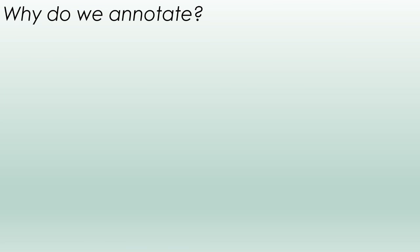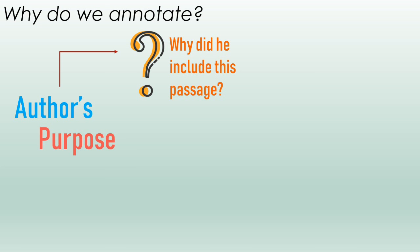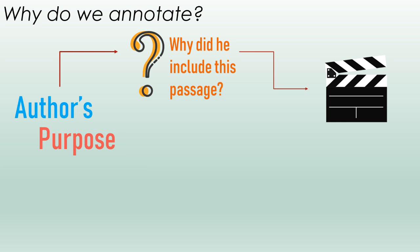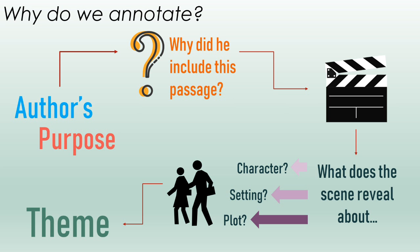Why do we annotate in the first place? We're trying to find out the author's purpose — the reason why the author wrote this at all. Why did he decide to include this specific passage in his piece of writing? Think of the author as a director making a movie. Just as a director decides which scenes to cut, authors have to edit and remove some passages. To figure out why this piece of text made the cut, we annotate and determine what the passage reveals about character, setting, and plot. Once we know this, we can finally discover the theme, which is our end goal.